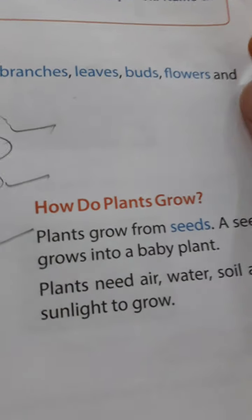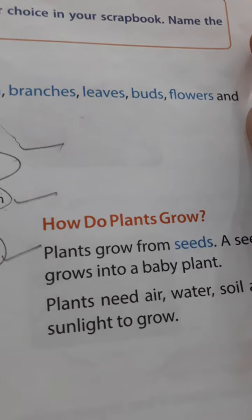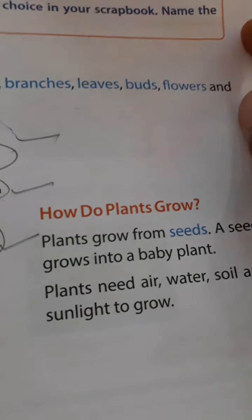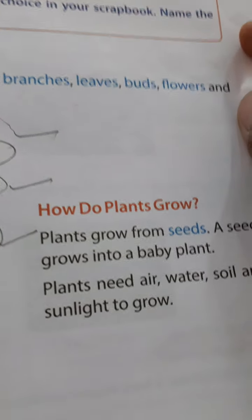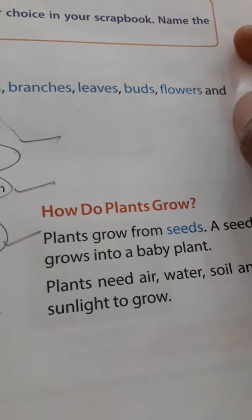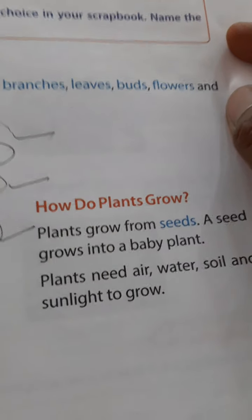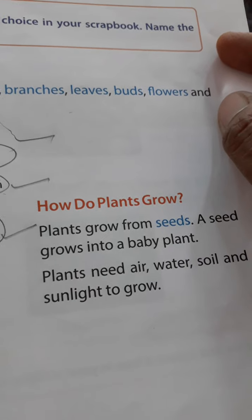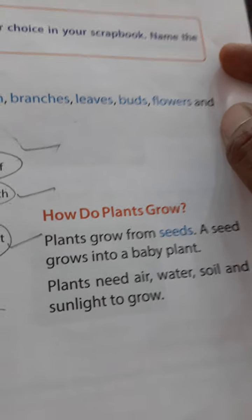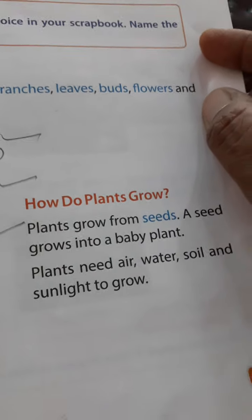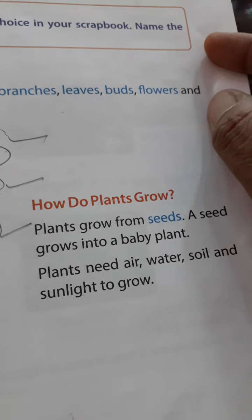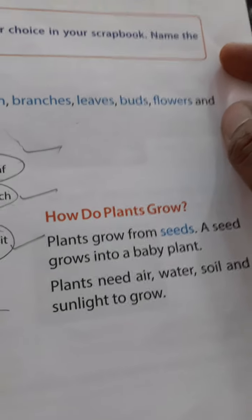How do plants grow? Plants grow from seeds. A baby plant grown from a seed is known as a sapling — S-A-P-L-I-N-G. Plants need air, water, and sunlight to grow.